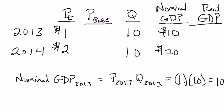It turns out that it's actually relatively easy to do. The way we do it is we basically pick a year arbitrarily and call it the base year. I'm going to go ahead and say the base year is 2013. In principle I could have used 2014 or any year, but I'm going to use 2013.